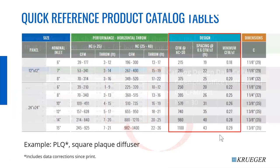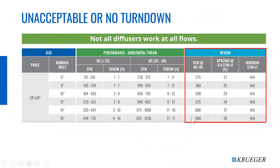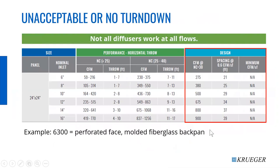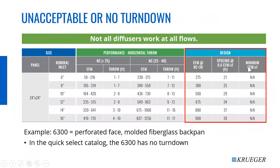In this catalog presentation, we're now saying: here's the NC you want to use as a design — it tells you what the diffuser spacing should be and what the turndown should be. It works out really well for the prism. You can see we've got design spacing at 0.6 CFM per square foot and the minimum CFM per square foot for the PLQ. Note: the printed catalog had an error on the first one — we fixed it here. However, not all diffusers work at these turndowns. The molded fiberglass back-pan perforated diffuser, the 6300, shows 'NA' for minimum — it isn't even 80% ADPI at 0.6 CFM per square foot.